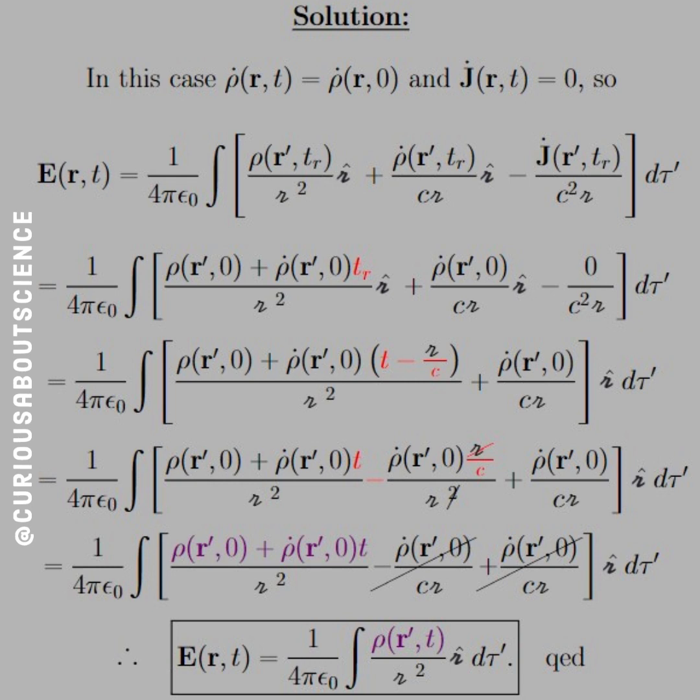And then we just plug in the definition for the retarded time. And, as you see here, we split up that fraction, thankfully. Because we have to distribute the rho dot into the T minus script R over C.